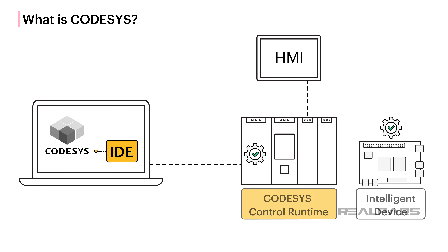This is a really exciting feature of Codesys, because it allows programmers and controls engineers to develop truly hardware-independent applications. As you may have picked up, 3S — the company behind Codesys — is a software company. They develop the Codesys Development System and runtime, and generate revenue by licensing the runtime to PLC manufacturers. 3S does not manufacture any hardware. This is very different from traditional automation companies like Siemens and Rockwell Automation, which develop a proprietary development system and runtime and manufacture their own hardware. Although this may seem like a small difference, it introduces some advantages for PLC manufacturers and PLC programmers.